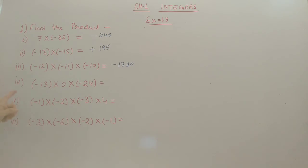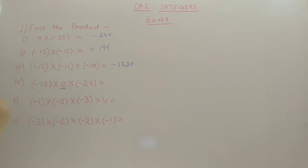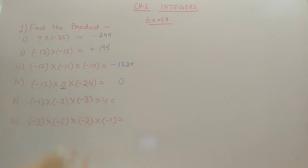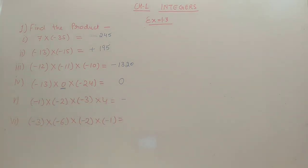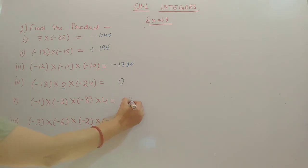The fourth one has a middle term of 0. If we multiply anything with 0, the answer will be 0, so we can directly write 0. The fifth one is minus 1 into minus 2 into minus 3 into 4. Minus into minus becomes plus, and the third minus remains, so the final symbol is minus. Then 1 into 2 is 2, 2 into 3 is 6, 6 into 4 is 24, so the answer is minus 24.